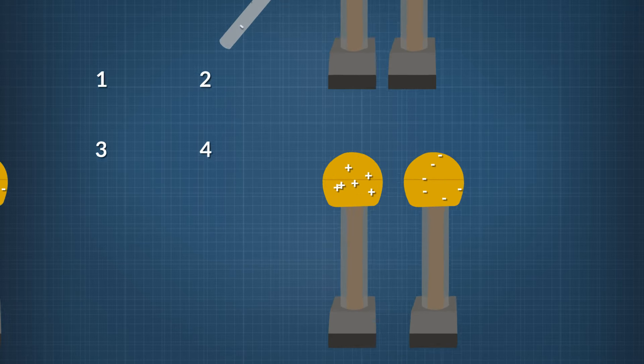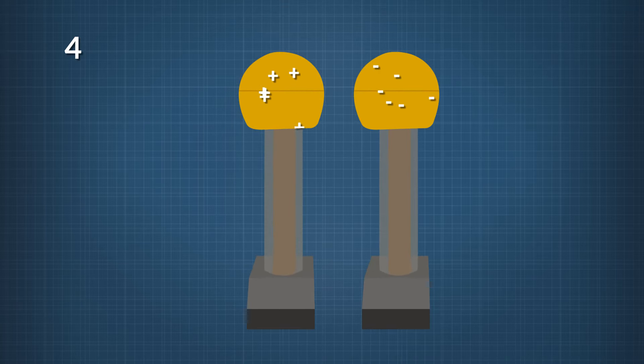Finally, in frame 4, we removed the charged rod from the picture. The left sphere has a positive net charge, and those charges repel each other and spread out over the sphere. The negative charges on the right sphere will be affected only slightly by the removal of the rod and the redistribution of positive charge on the left sphere. We started with two uncharged metal spheres and induced an overall positive charge on one and a negative charge on the other without ever touching our charged object, the rod, to the spheres.